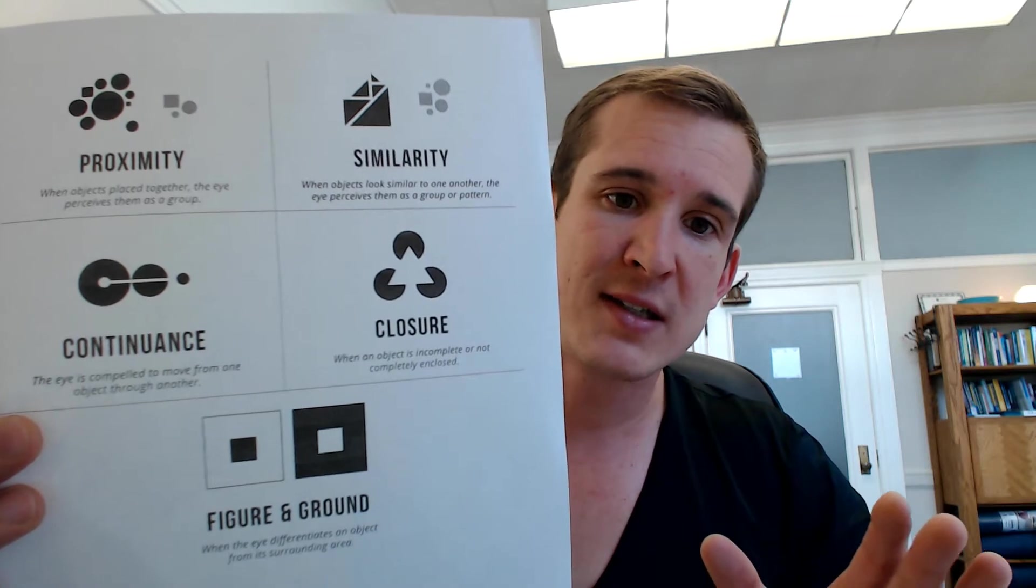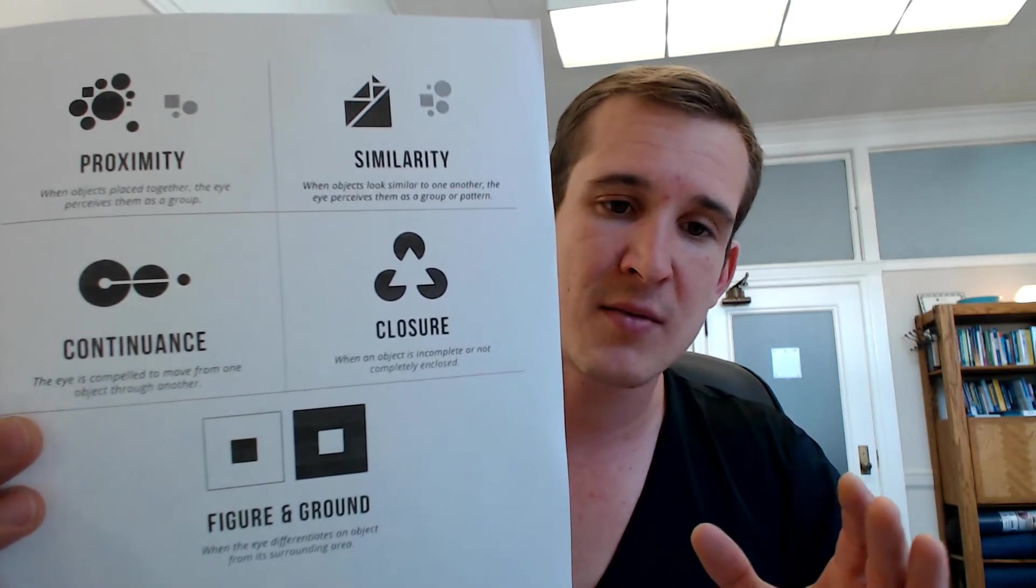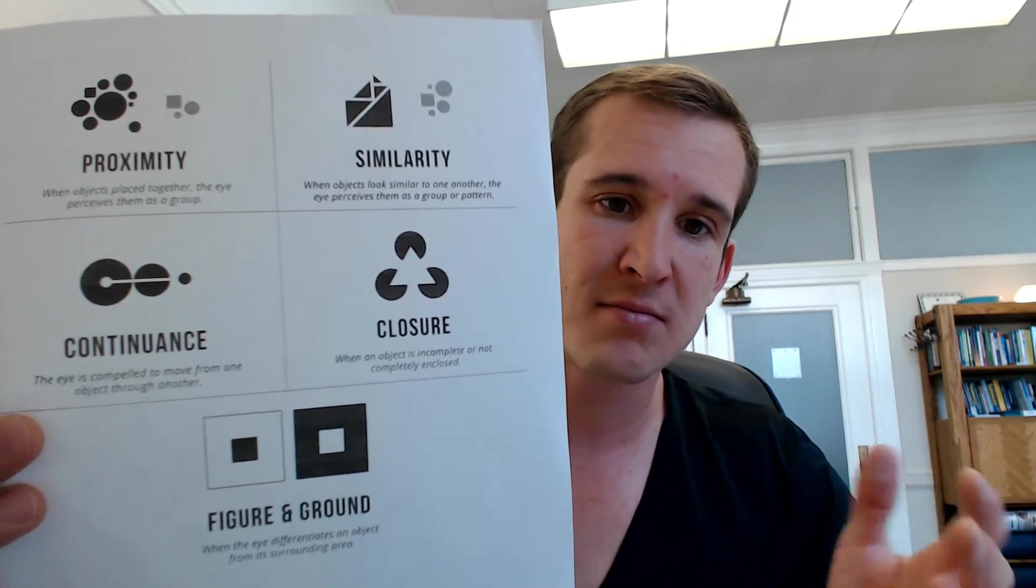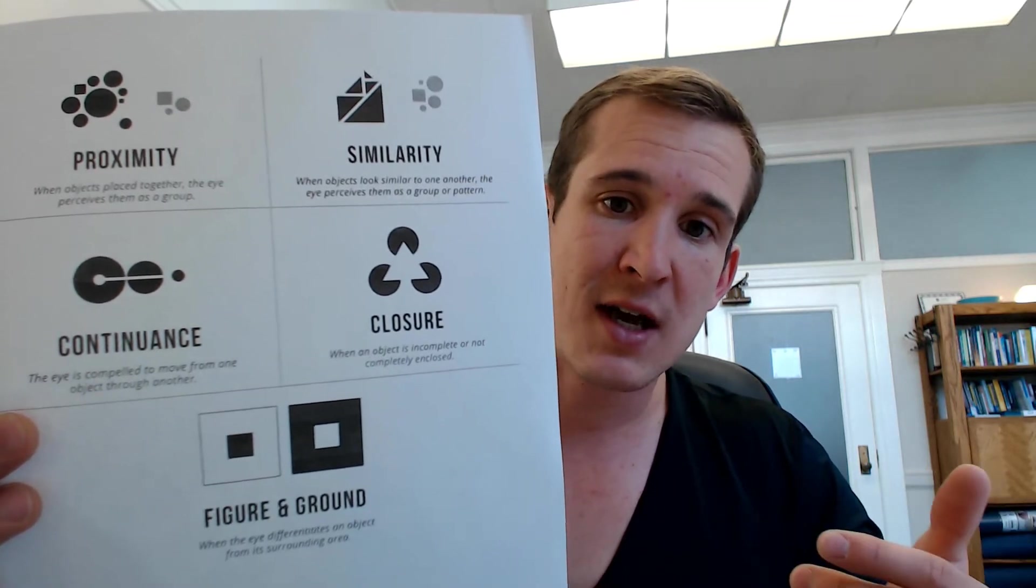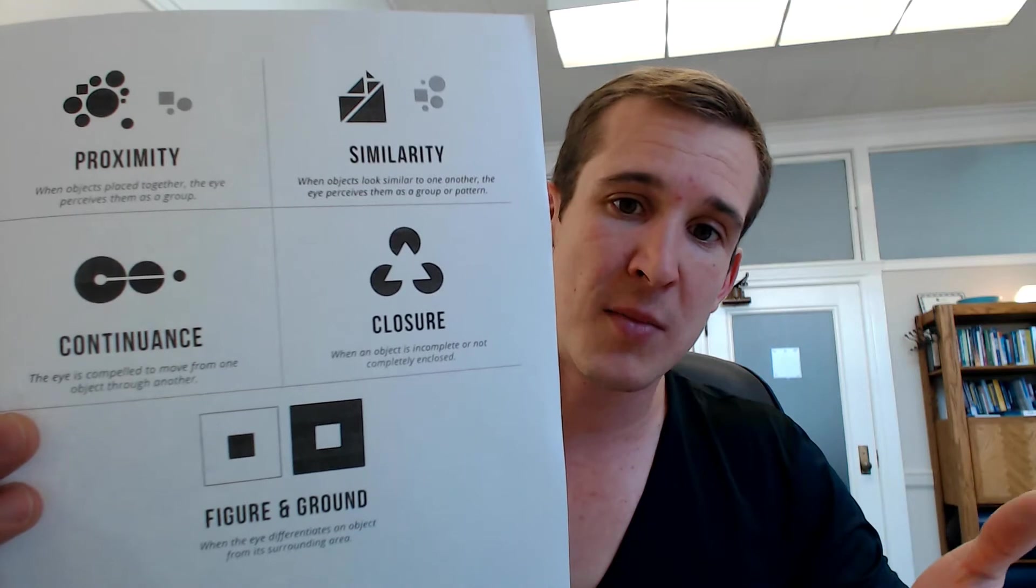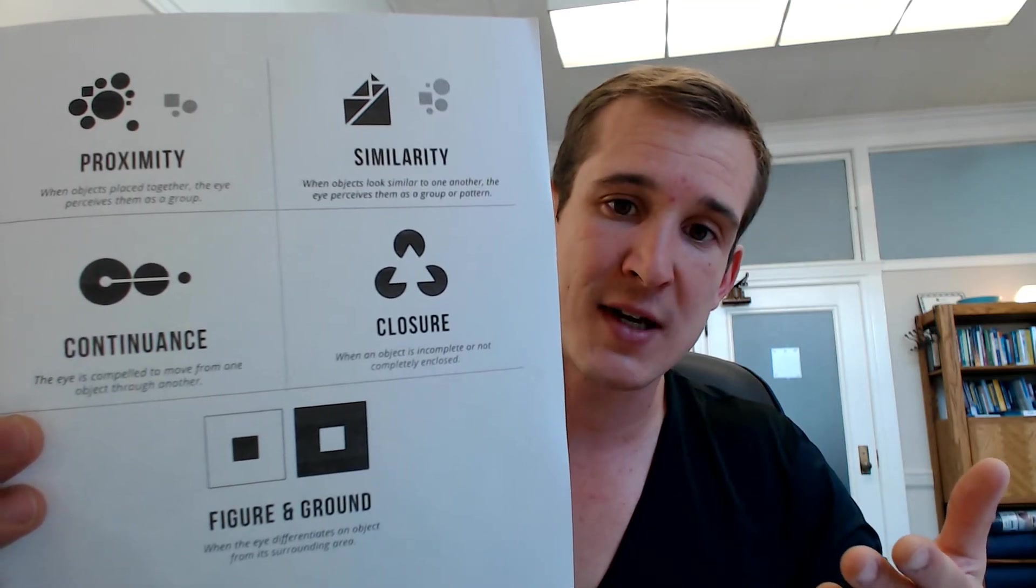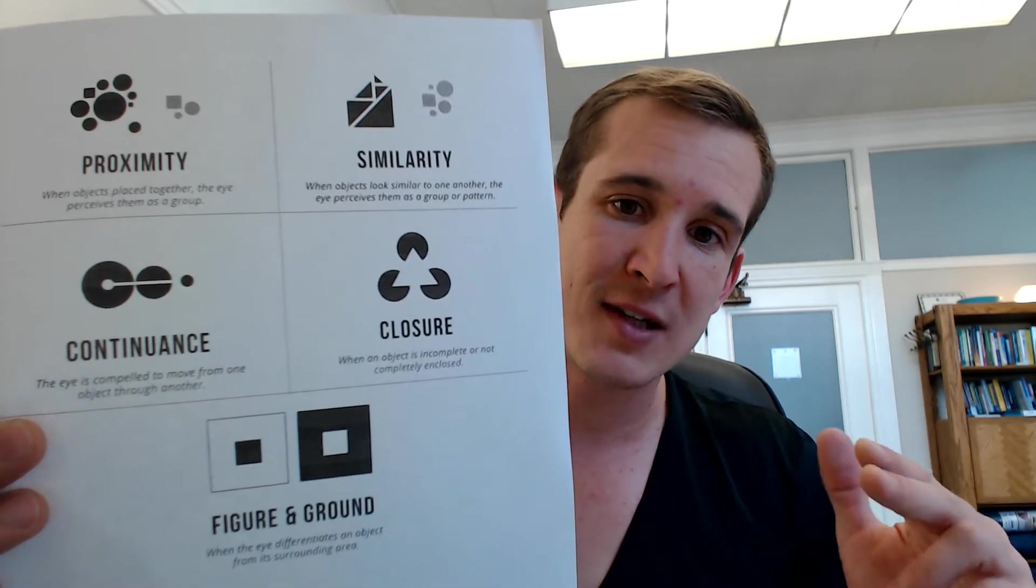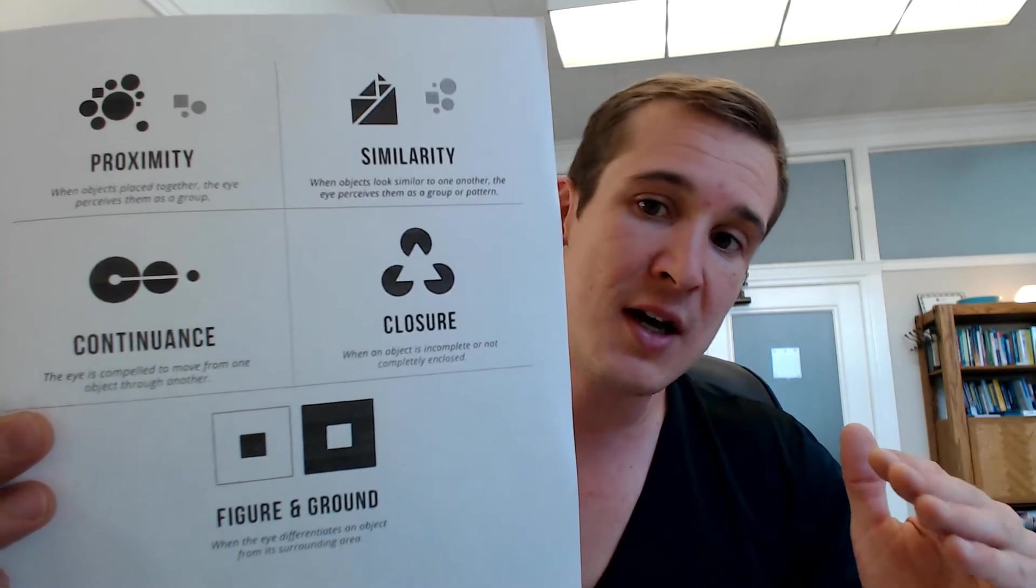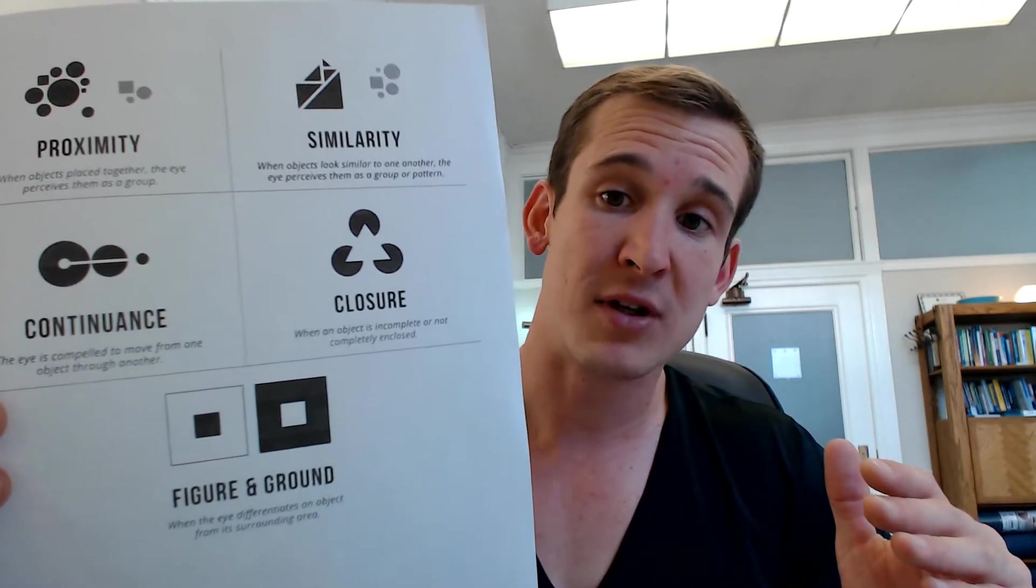Continuance is how the eye sees this continuous form, even though it's just a blank space. Enclosure is somewhat similar, where you could focus on the different little Pac-Man right there, or you can see that there's a triangle, and our brain tries to complete that incomplete gestalt.